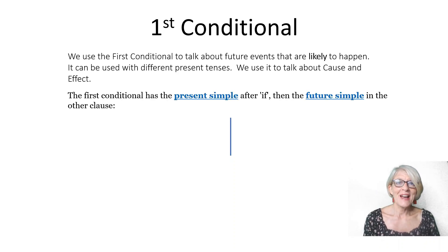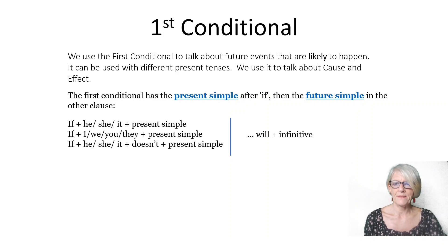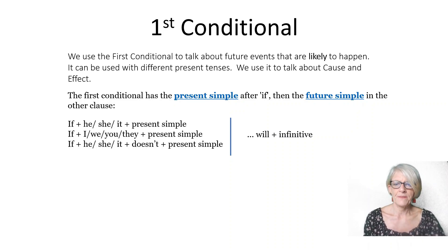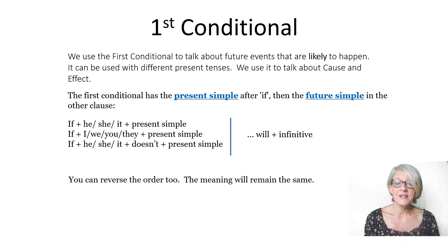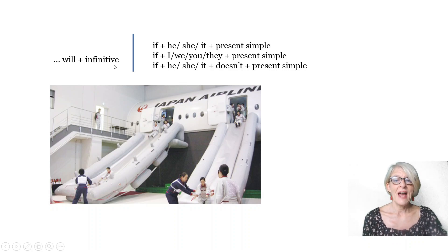The first conditional has the present simple after 'if' and then the future simple in the other clause. So we have: if plus the subject plus the present simple, and the second clause is will plus infinitive. You can reverse the order too and the meaning will remain the same — you can put the will clause first, will plus infinitive, and then the if clause second.